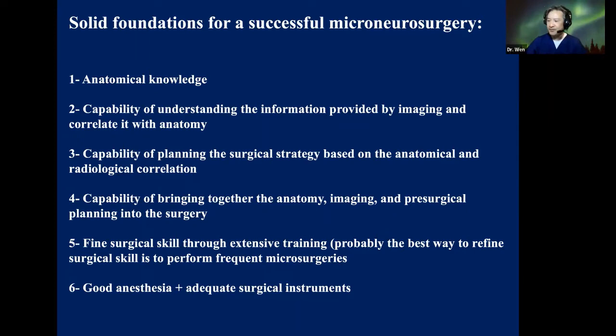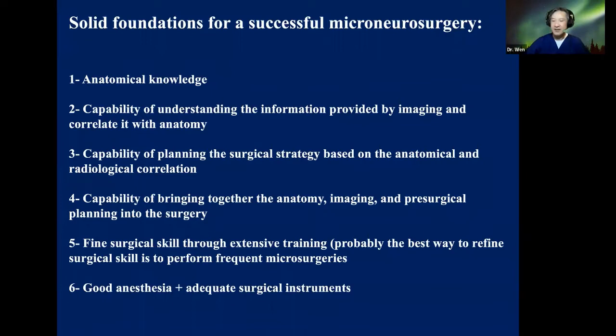What is the concept? How can a young neurosurgeon become a very good microsurgeon? I have listed six solid foundations for successful micro neurosurgery. First, you have to know anatomy — not as an anatomist, but as a surgeon. The second is you have to have the capability of understanding the information provided by imaging and correlating it with anatomy, looking at MRI or angiography and determining where a lesion is located and how to approach it.